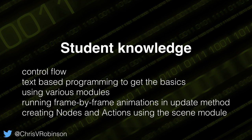They do frame-by-frame animation in the update method — usually moving something five points up or down the screen. I get them working with lists and dictionaries straight away, so if they create objects and want to loop through them, we add them to a list. Towards the end, they create nodes and actions and add actions to nodes. That's where most of them are at the moment.